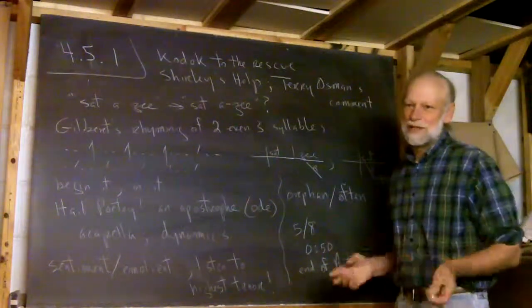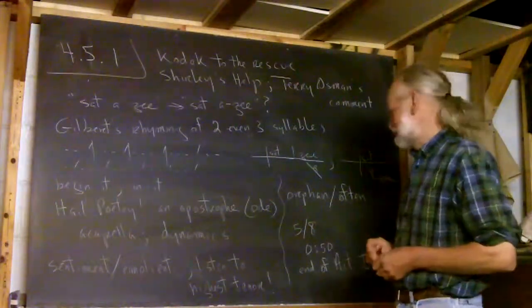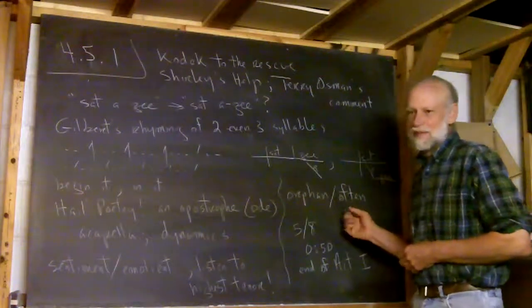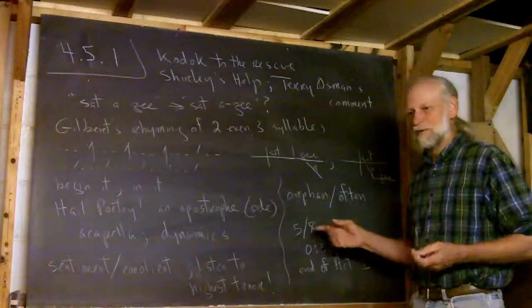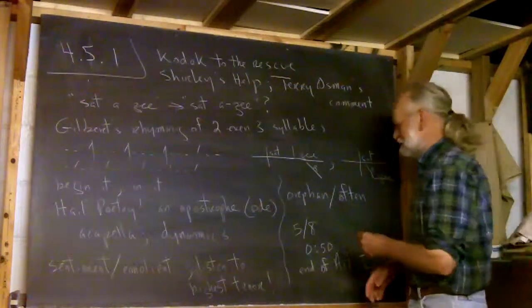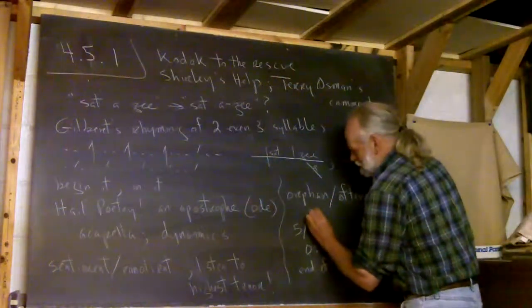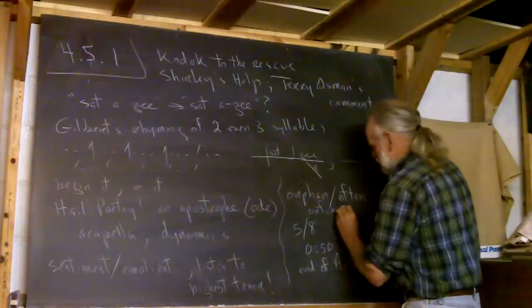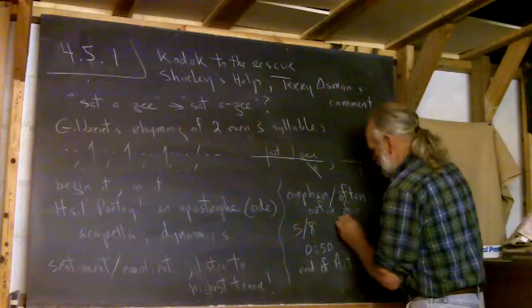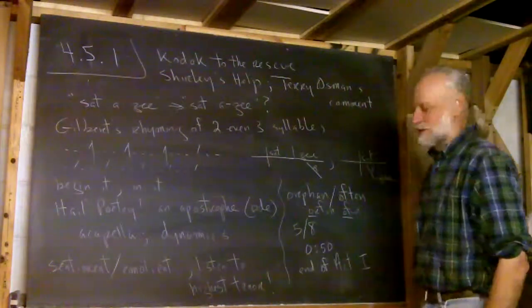What you're going to see today is some of the most fun here. Orphan and often. Well, in my dialect, these don't sound that much alike. Orphan, often. My spelling system, I would go or fun, or fun, and this would be often. Orphan, they're not the same.